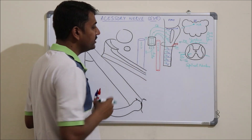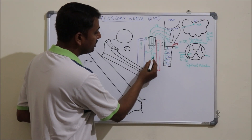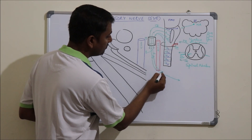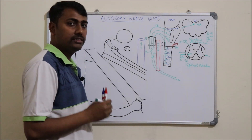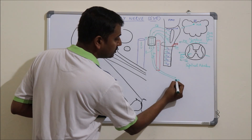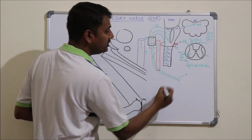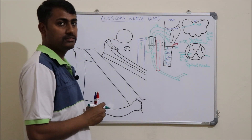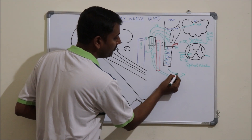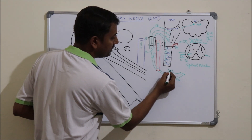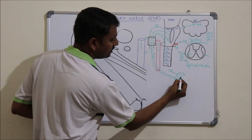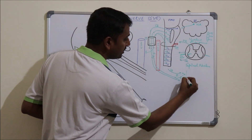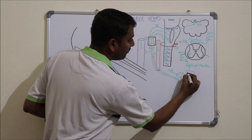The cranial part joins with the 10th cranial nerve (vagus) and continues with it. The cranial part of the accessory nerve travels with the vagus nerve and gives three branches along with it. The first branch is the pharyngeal branch, through which fibers of the cranial part also travel. This pharyngeal branch also receives fibers from the glossopharyngeal nerve.